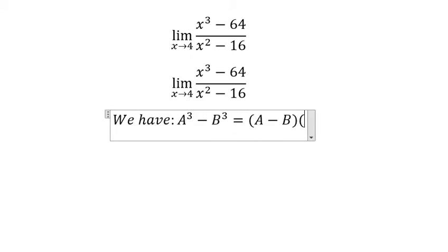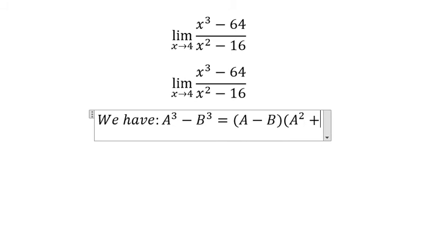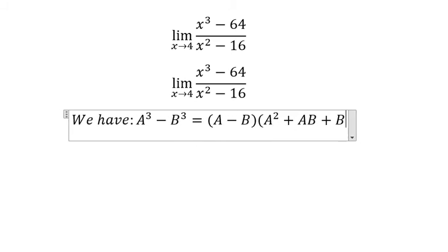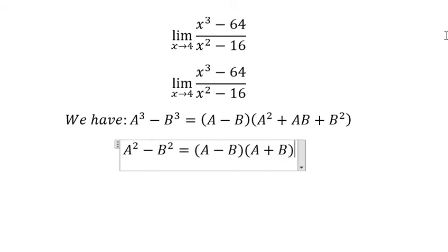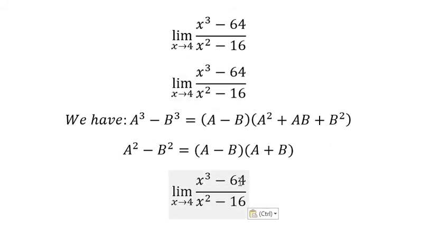The next one we have a square minus b square that is equal to a minus b and a plus b. So this one we got about 4 to the power of 3 and 4 to the power of 2.